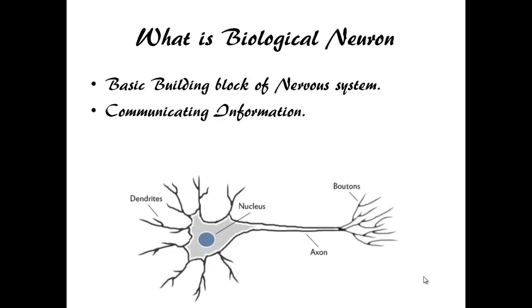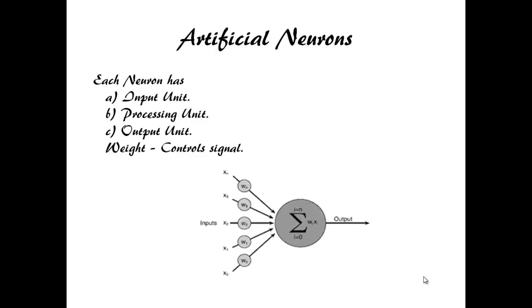So based on this concept, Neural Networks are designed for machine learning. Consider this picture. This is a biological neuron. Neurons are individual elements of neural network.